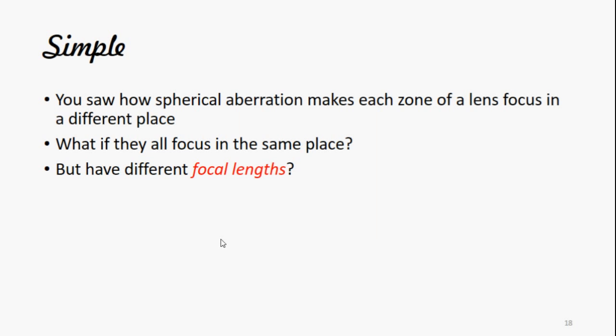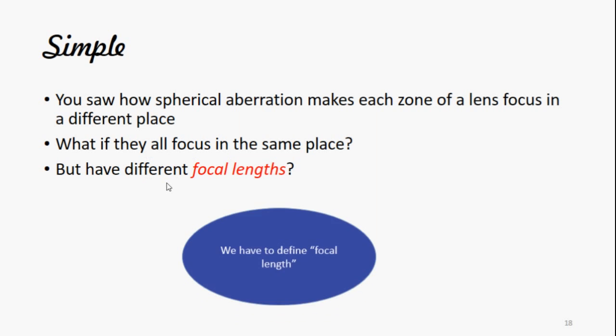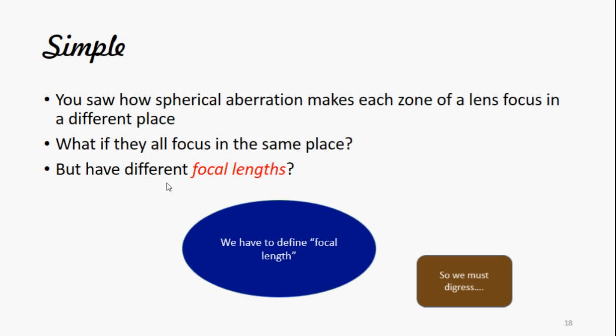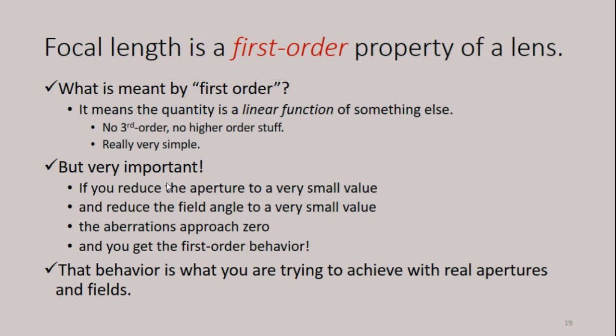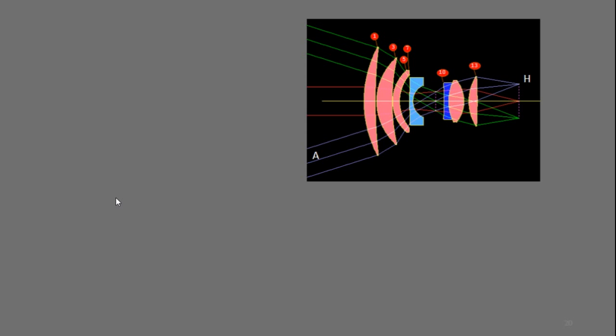Well, you saw how spherical aberration makes each zone of a lens focus in a different place. What if they all focus in the same place, but have different focal lengths? Well, we have to define the term focal length. So I must digress. Focal length is a first order property of a lens. By first order means it's a quantity which is a linear function of something else. There's no third order, no higher order stuff. It's really very simple, but it's very important. Because it turns out, if you reduce the aperture to a very small value and the field angle, the aberrations approach zero, and what you get is just the first order behavior. And that's the behavior that you're trying to achieve with real apertures and fields.